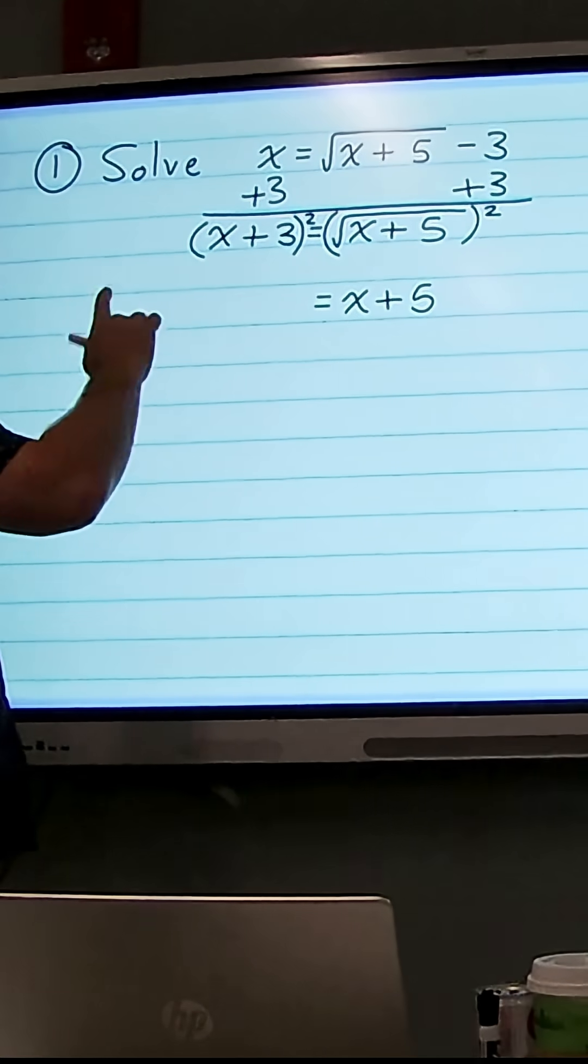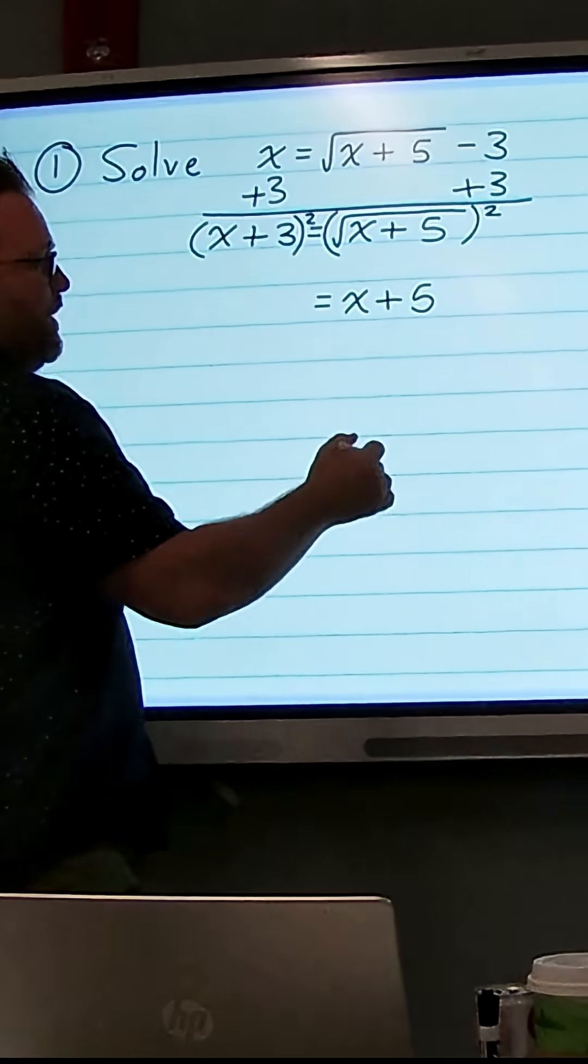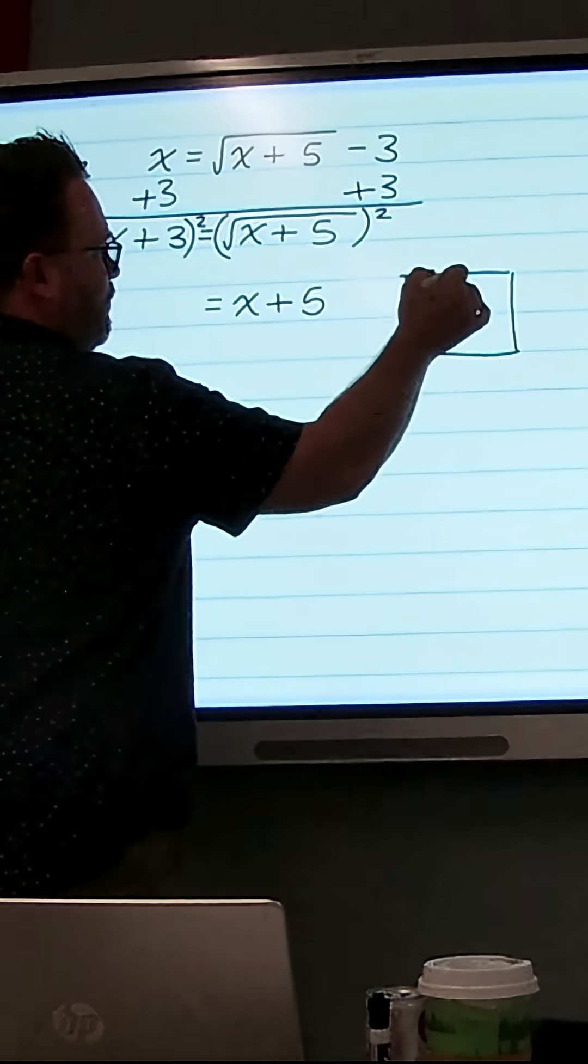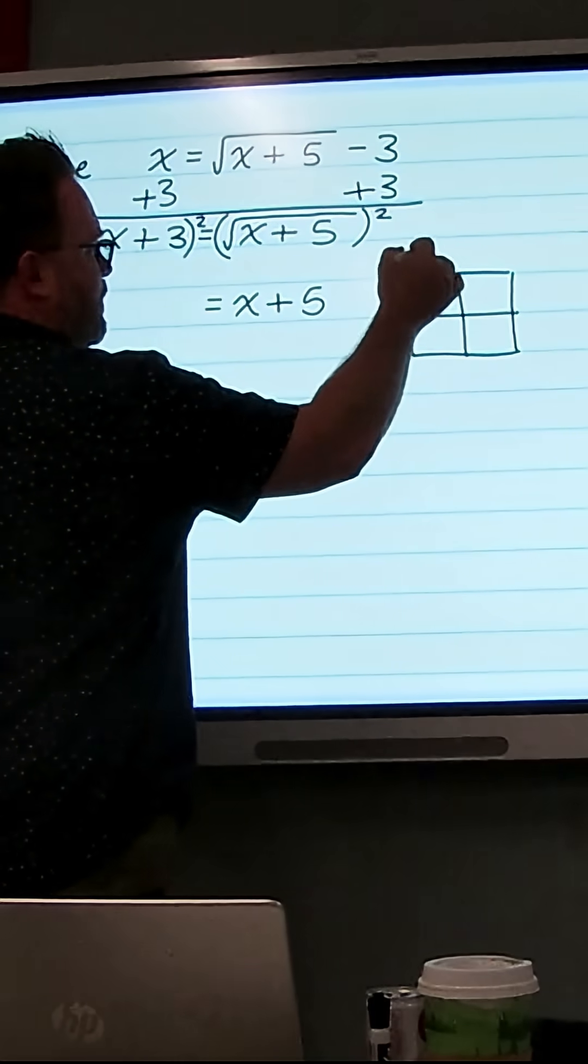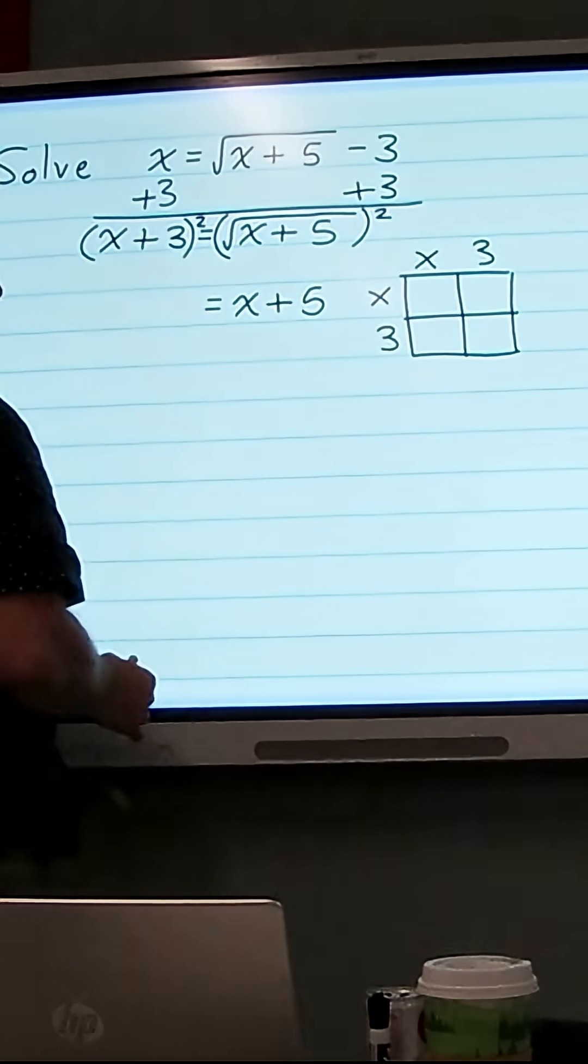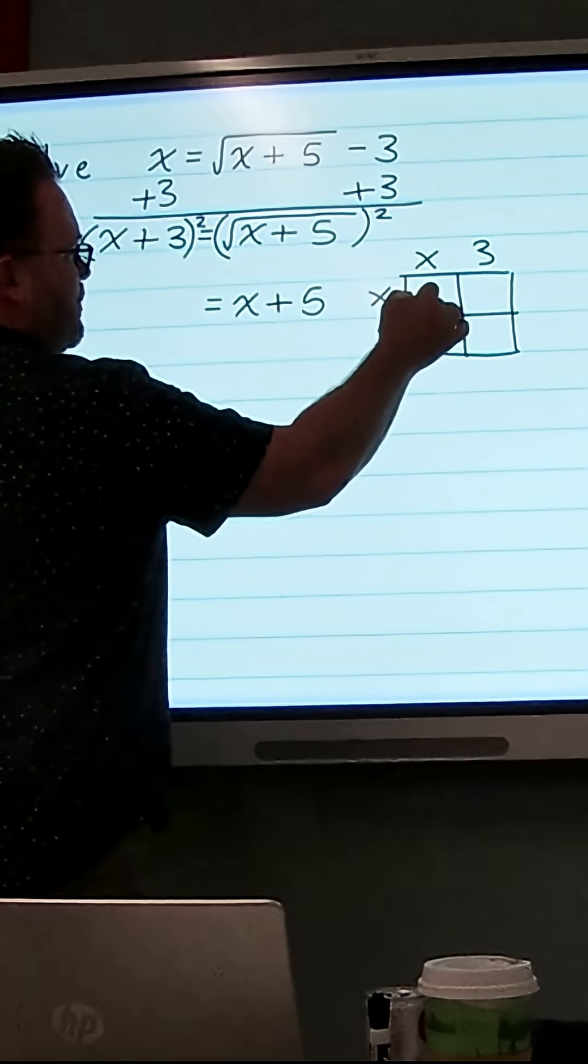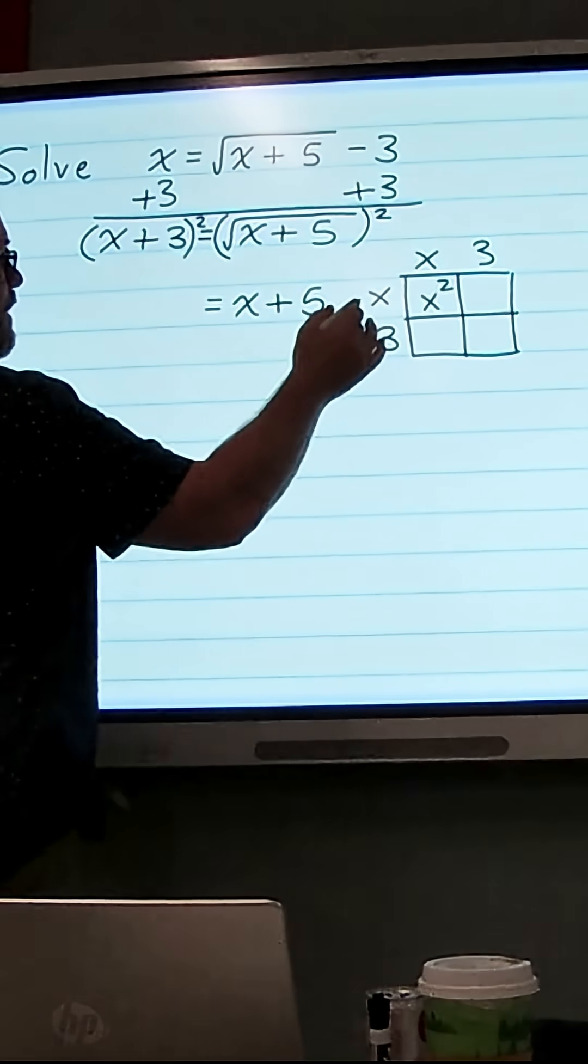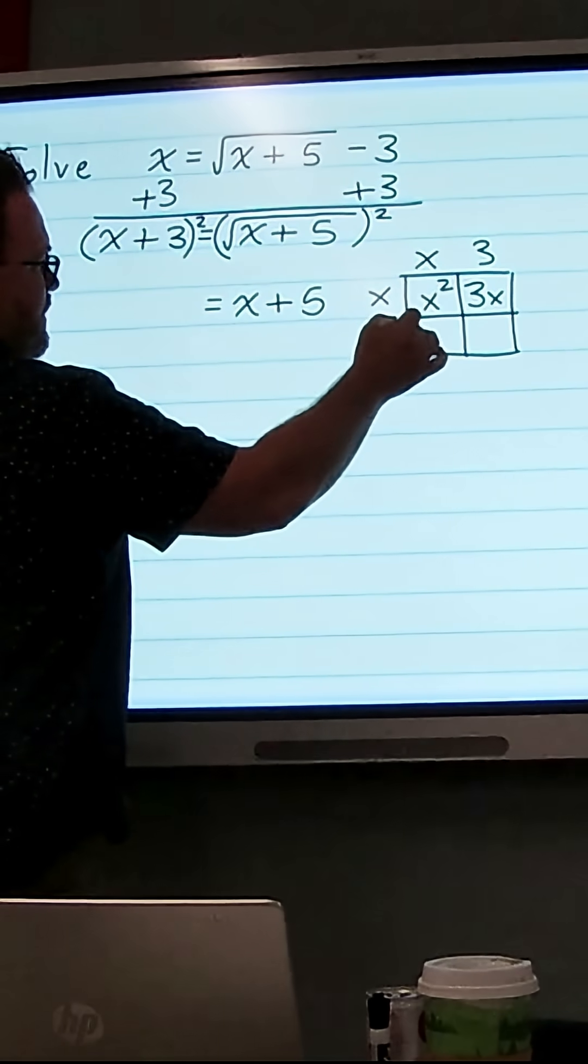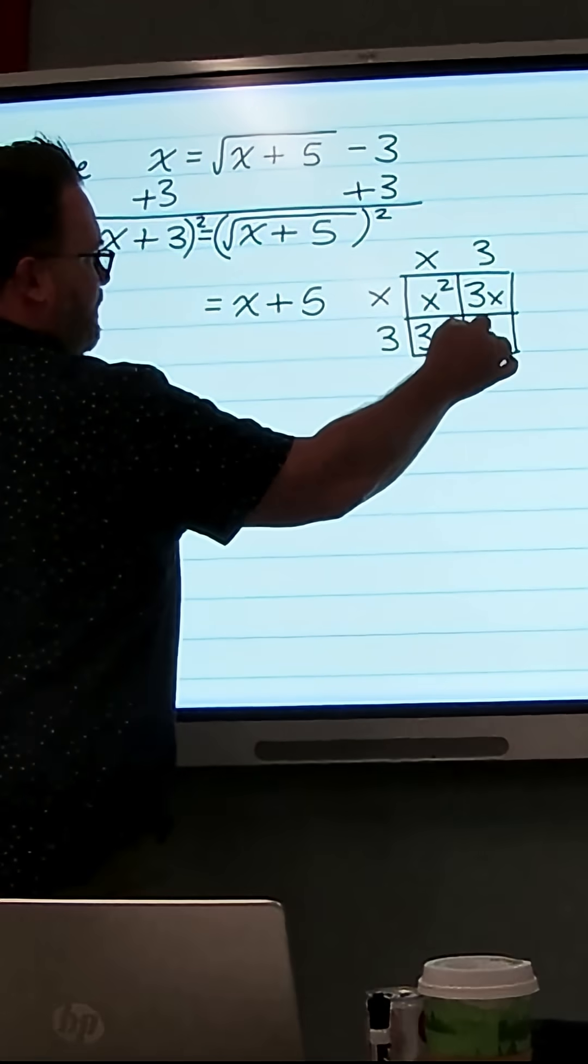Now on the left we have x plus 3 times x plus 3, so I can do that with the Punnett square here. So we're going to do x plus 3 times x plus 3, so if we do x times x we get x squared. x times 3 is 3x, x times 3 is also 3x, and then 3 times 3 is 9.